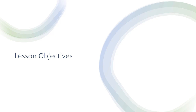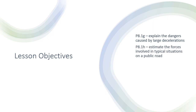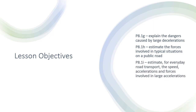What we are going to see in today's lesson is: what are the dangers caused by large decelerations? In cases of different types of decelerations, what will be the magnitude of typical forces involved in such situations, and estimates for everyday road transport — the speed, acceleration, and forces involved. So these are the things we are going to see in today's lesson.